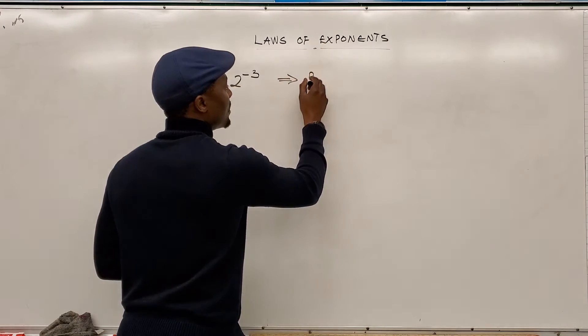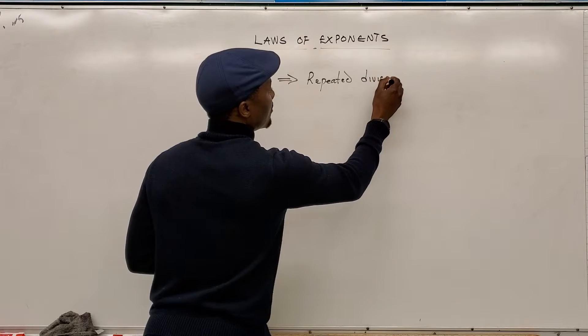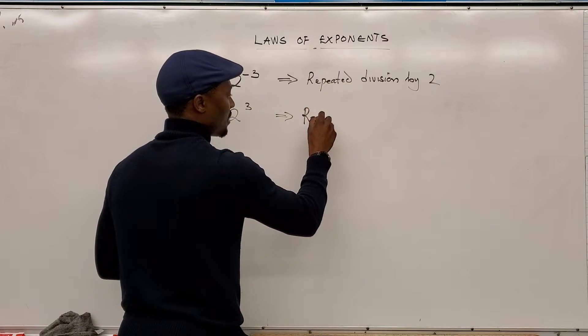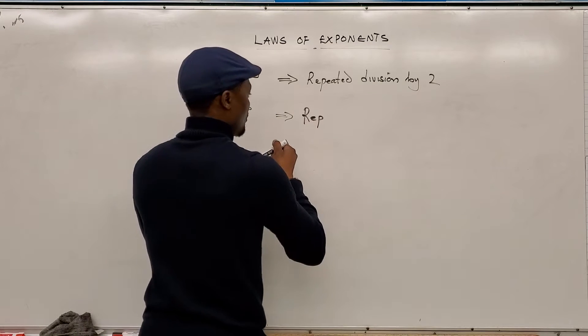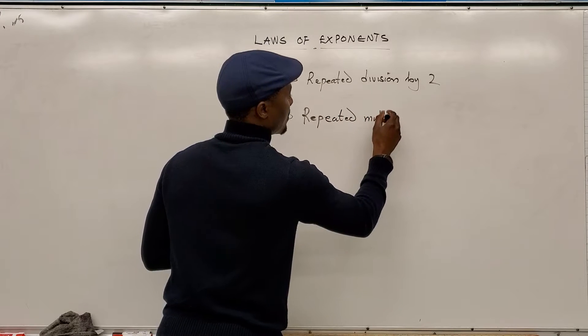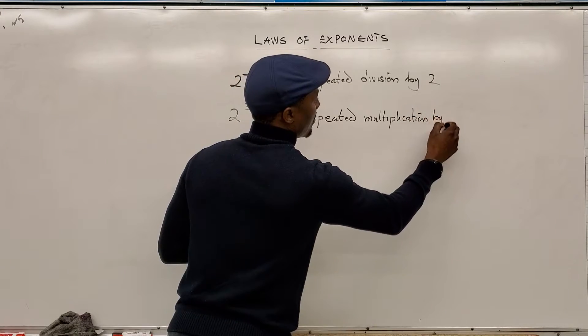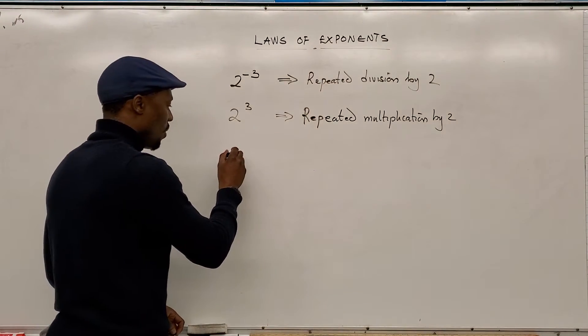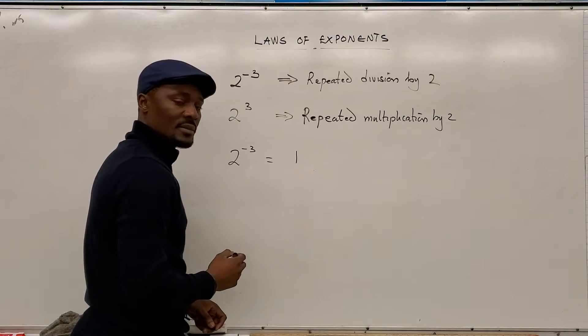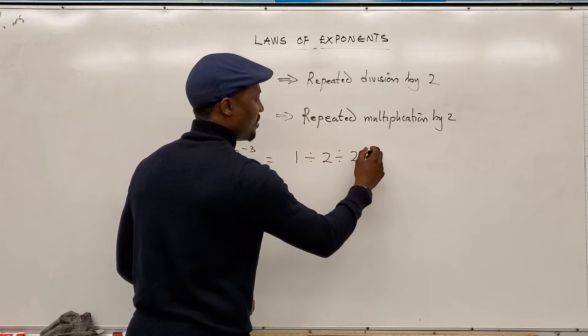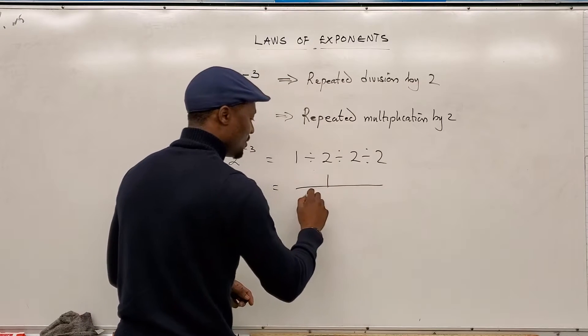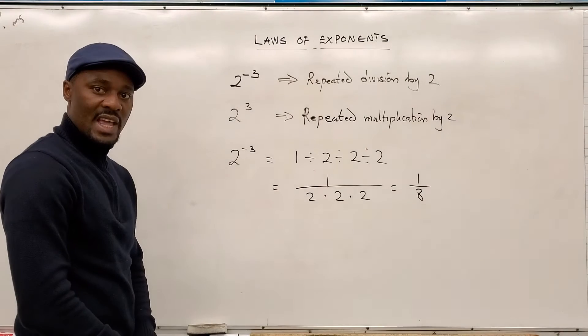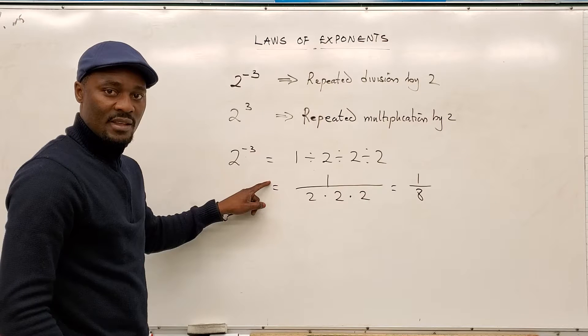This implies repeated division by 2. 2 to the 3rd power means repeated multiplication by 2. So, let's just put our identity element for multiplication, which is 1, which doesn't change anything. So, 2 to the negative 3 power means 1 divided by 2, divided by 2, divided by 2, which you can rewrite as 1 divided by 2 and then another 2 and then another 2. So, the answer to this is 1 over 8. It is repeated division.